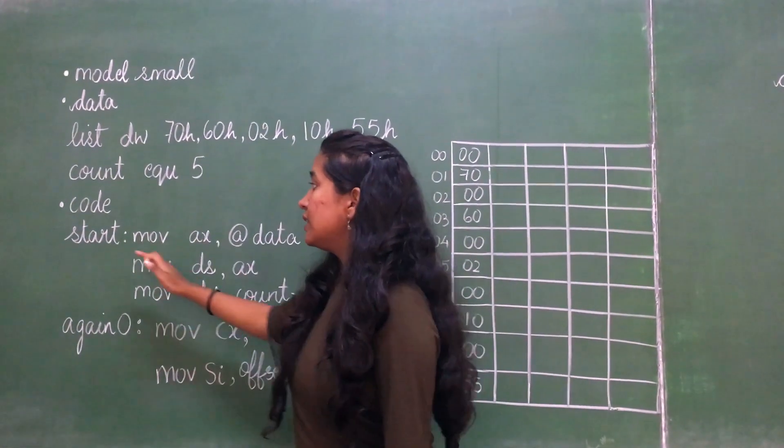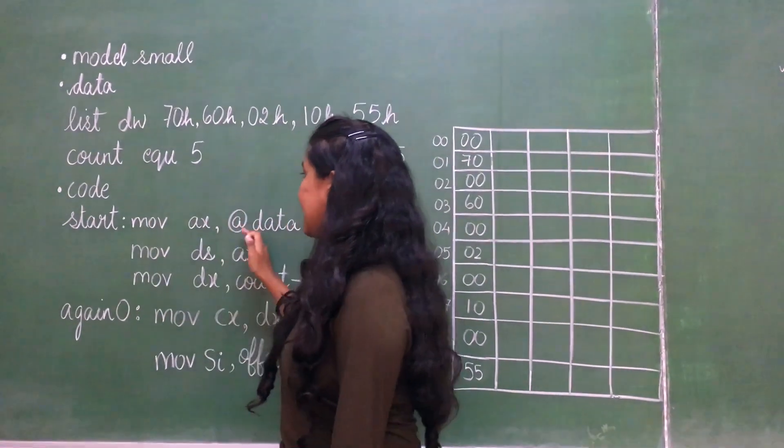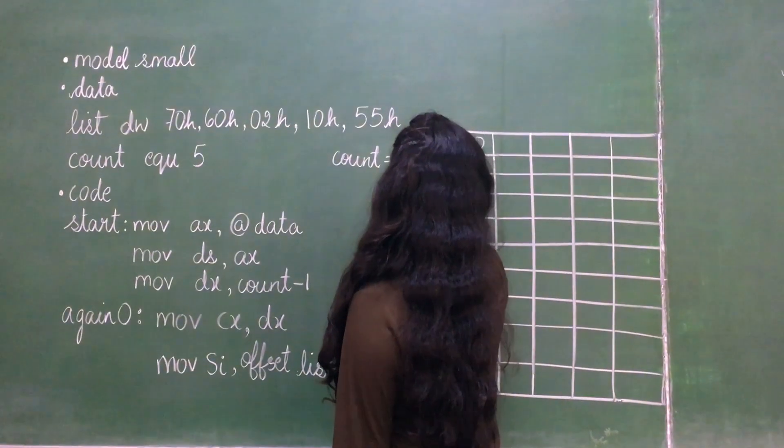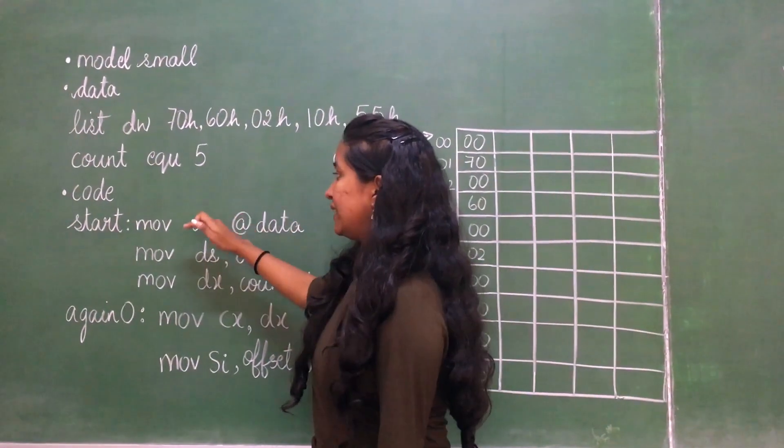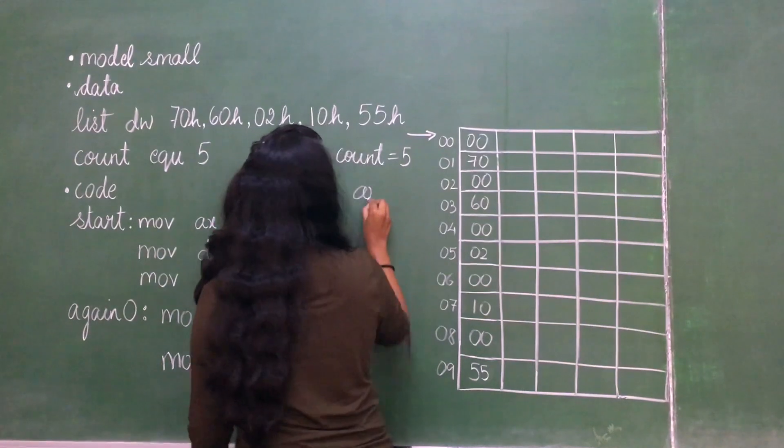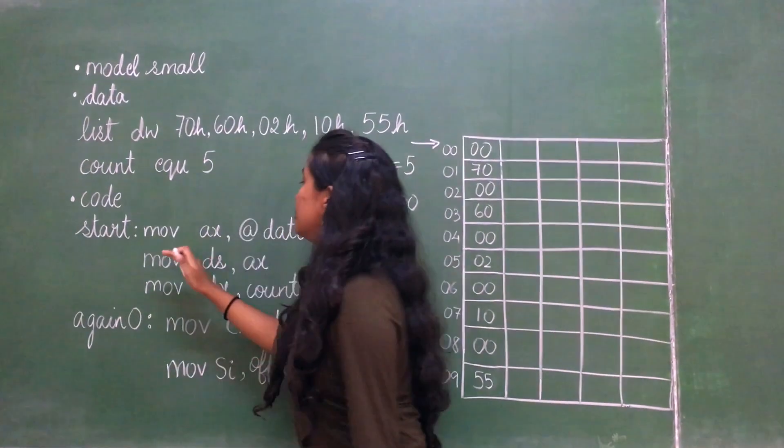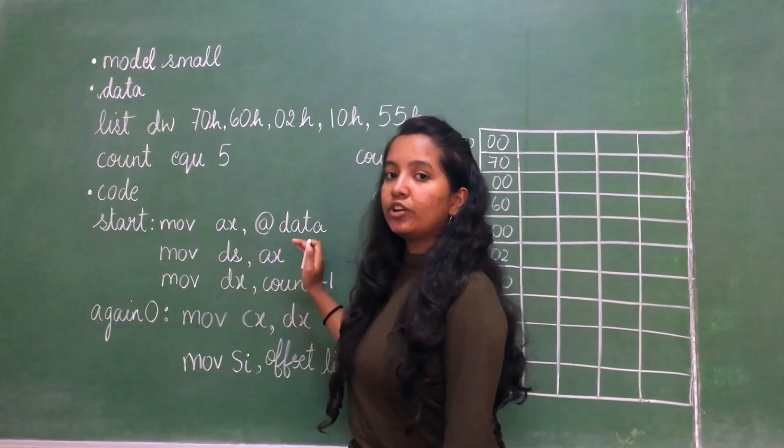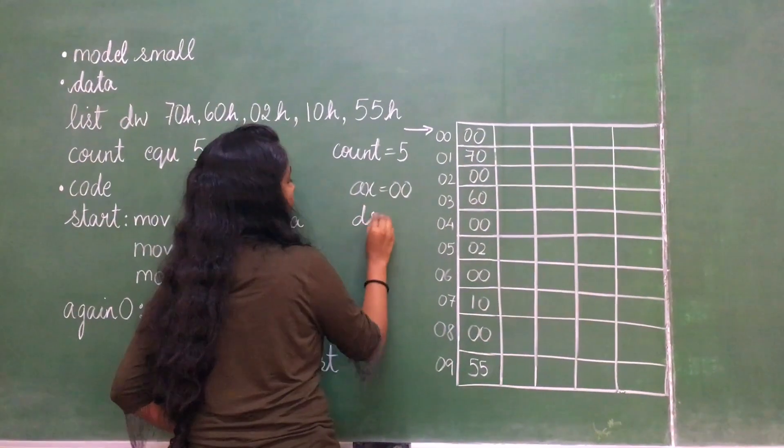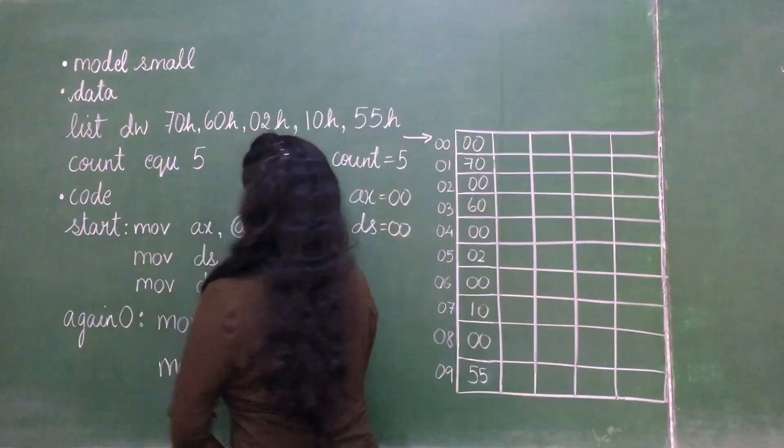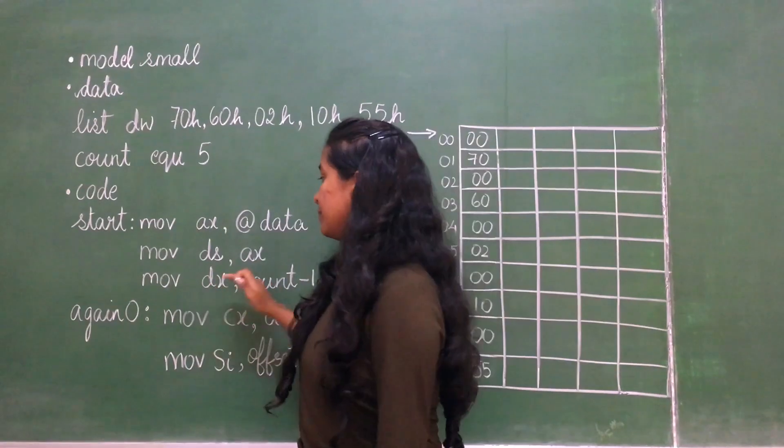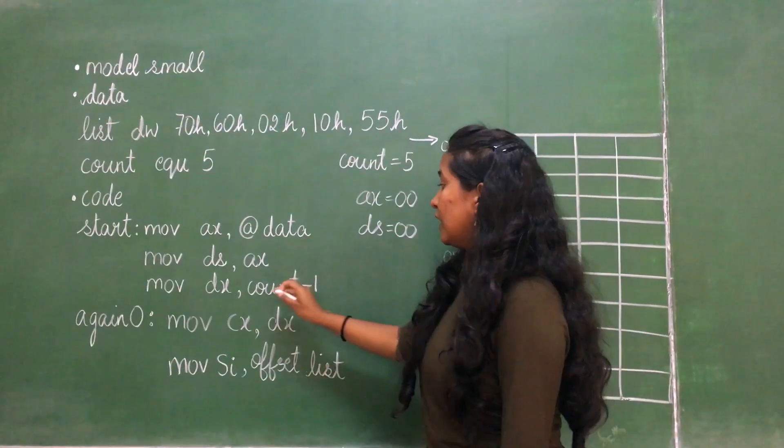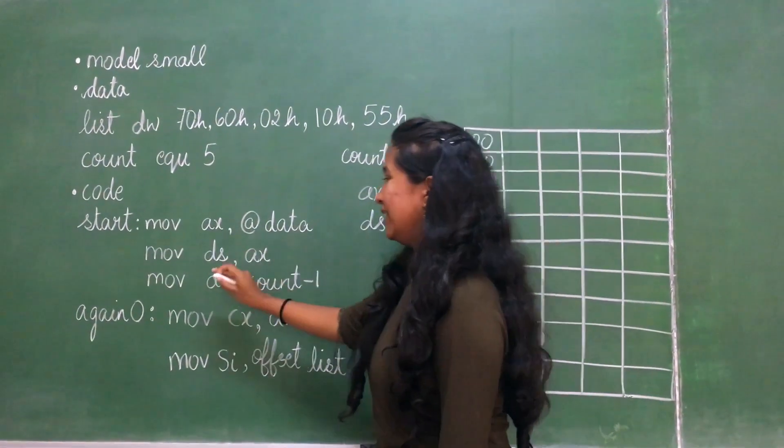Now coming to the code part: start, move AX, @data. Here @data refers to the starting address of the DS segment. Now this value will be stored in AX. Move DS, AX. The value of AX will be stored in DS, and this is an example of register to register transfer. Move DX, count minus 1. This step is used because we are keeping one variable constant and there are 4 comparisons. Count minus 1 will be equal to 4, and that will be stored in DX.